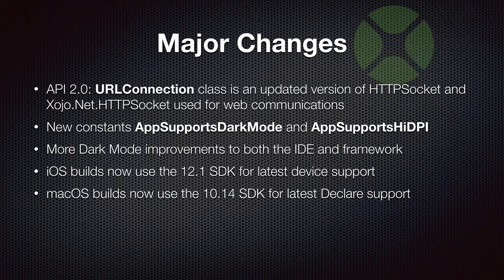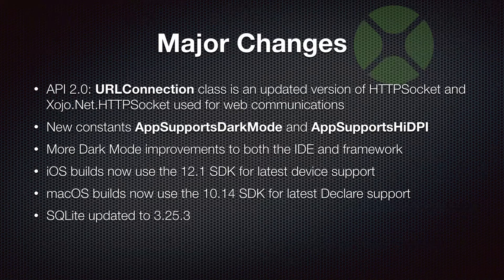We also updated the macOS builds to use a much newer macOS SDK — now using the 10.14 SDK — which allows you, particularly when working with declares, to access newer features of macOS. SQLite was updated to 3.25, a pretty significant release that added a couple of big new features. One new feature finally allows you to alter a table and change a column name, which has been missing from SQLite since forever. Another new powerful feature allows for interesting ways to group, order, and handle query data.